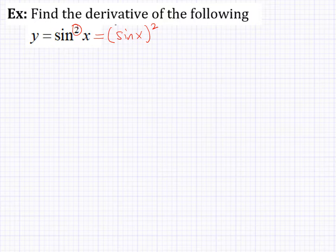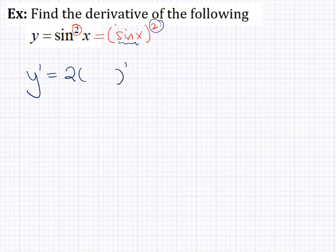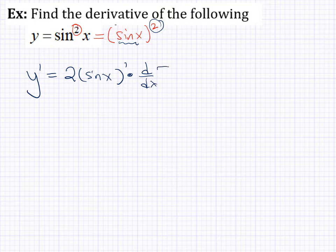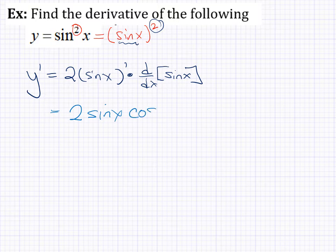If you think of this as a chain rule problem, you have your inside function and your outside function. To take the derivative, take the derivative of the outside part first — that's the power part — and the inside function stays the same. Then multiply by the derivative of that inside function. The derivative of sine x is cosine x. So we get 2 times sine x times cosine x, and that's the derivative. That's a very common example of how the chain rule works with trigonometric functions.